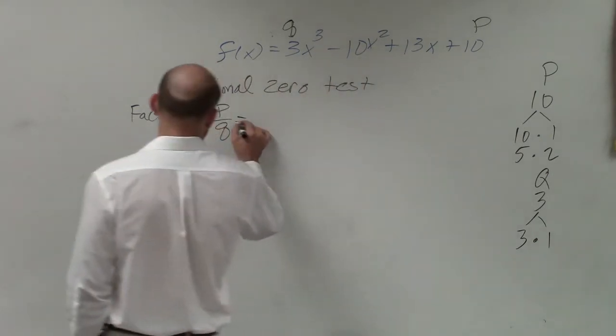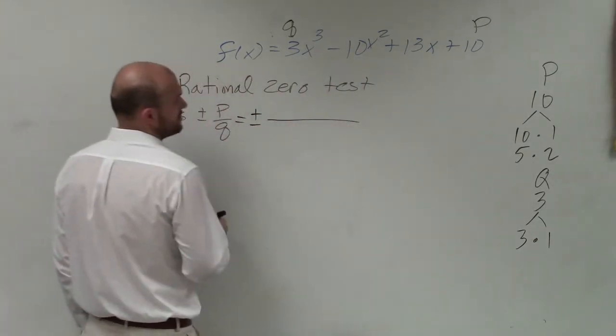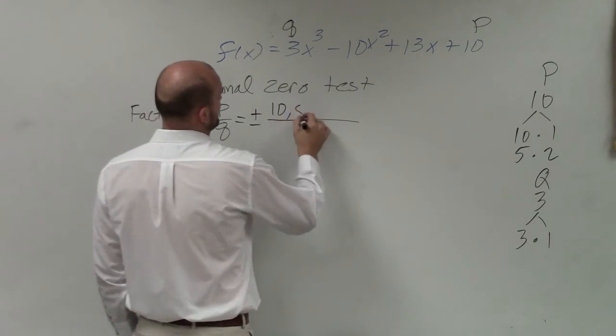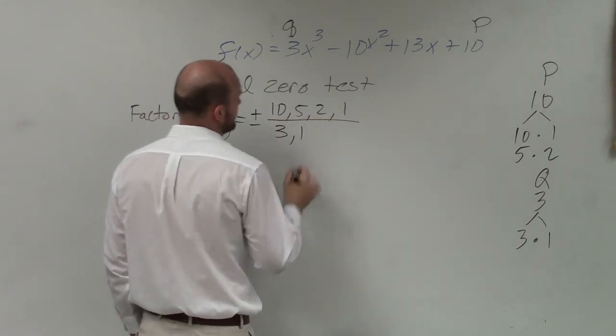So what that equals is plus or minus all the factors of p, which are 10, 5, 2, and 1 over 3 and 1.